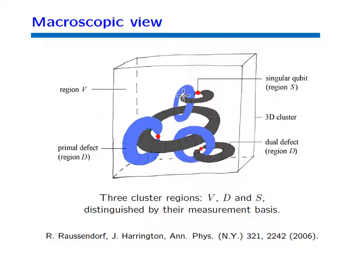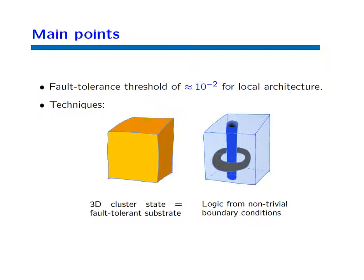The purpose of this class is to explain how all of this amounts to fault-tolerant quantum computation. There are two key observations. First, the three-dimensional cluster state is a fault-tolerant substrate — the fault-tolerance is inherent in these quantum states. Second, we can compute with those three-dimensional cluster states by drilling holes into them, and the computation is encoded in topological information, namely how these holes wind around one another. All of this amounts to a fault-tolerance threshold of about one percent.